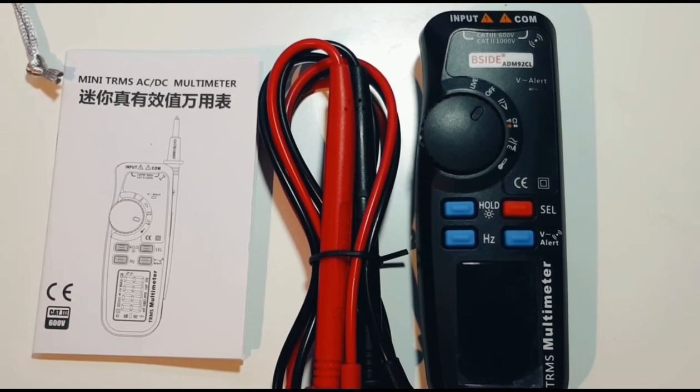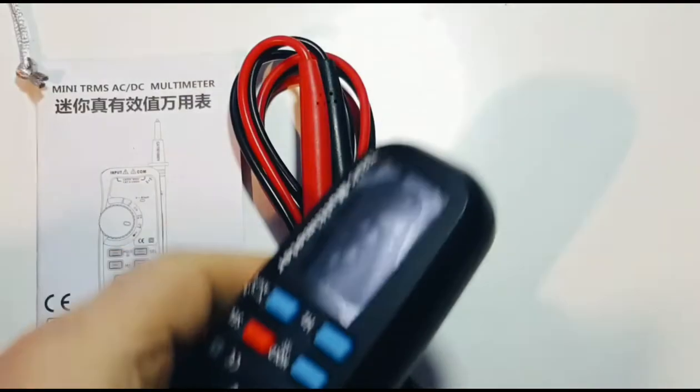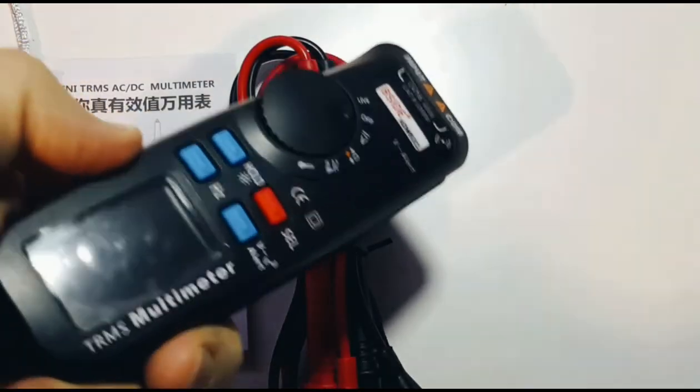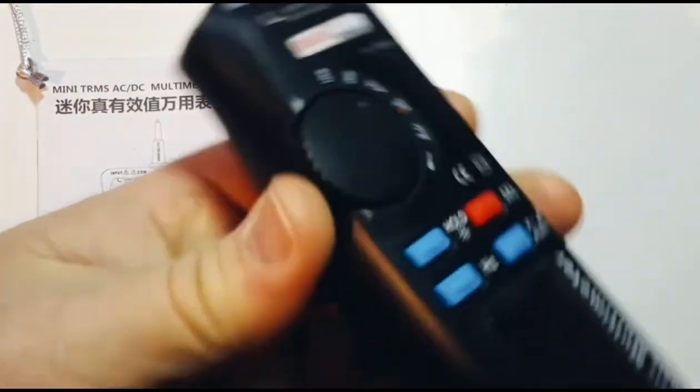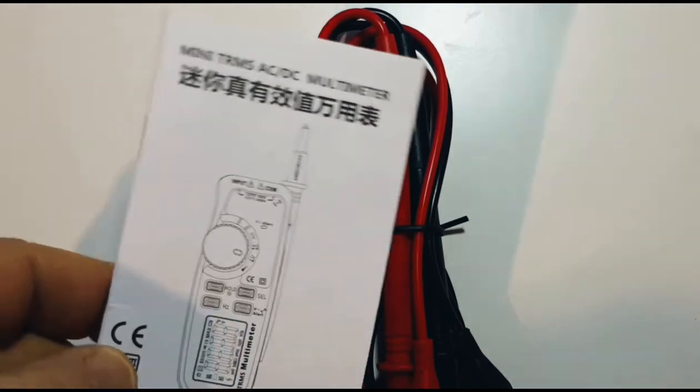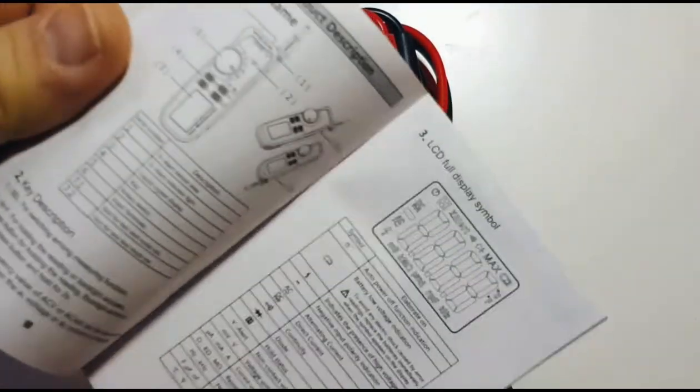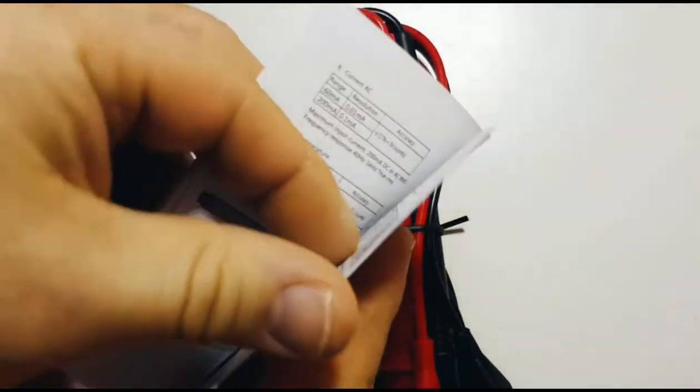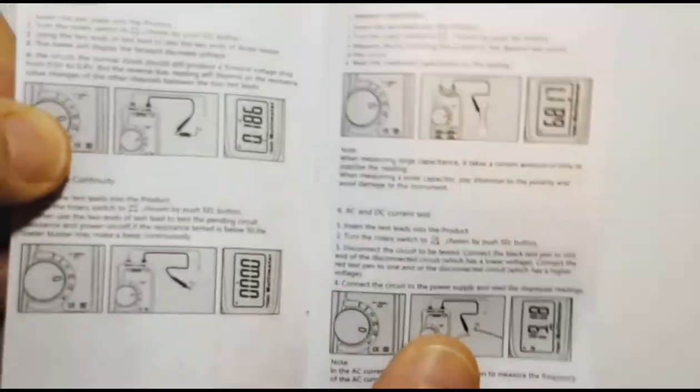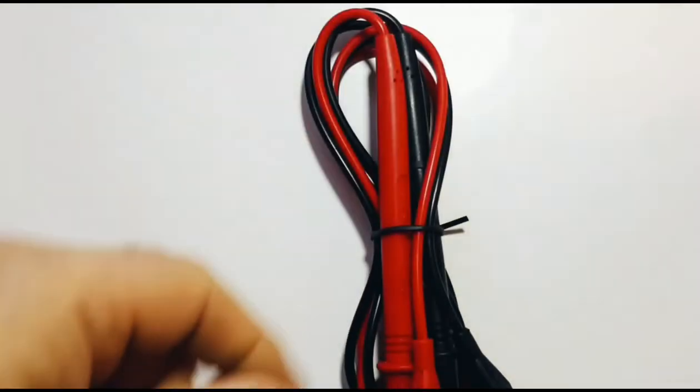So they call this a Swiss army knife and it's not because it's really sharp. No, it's because it does lots of things. Now right away you can tell this is a versatile little meter. True RMS and basically designed as a one hand deal. Ships with a small user guide and it is in English as well. Not bad actually. Have some great little pictures. Yeah, all in all pretty decent little manual.